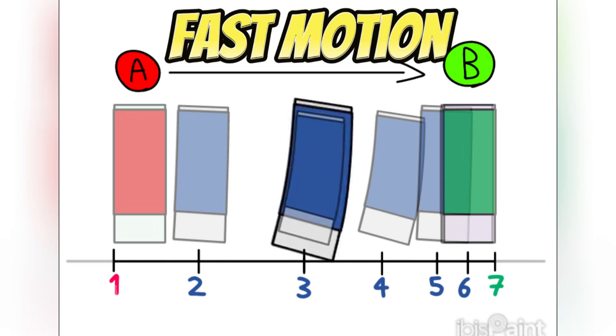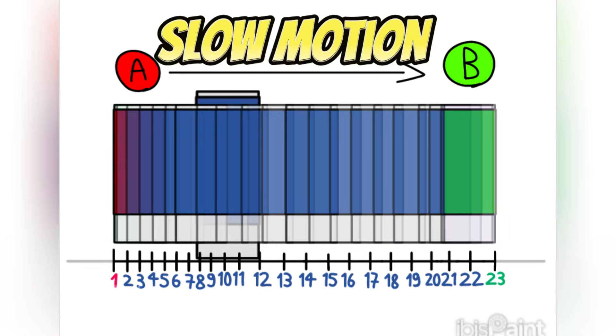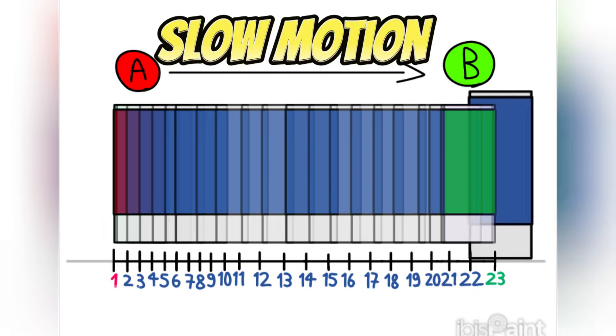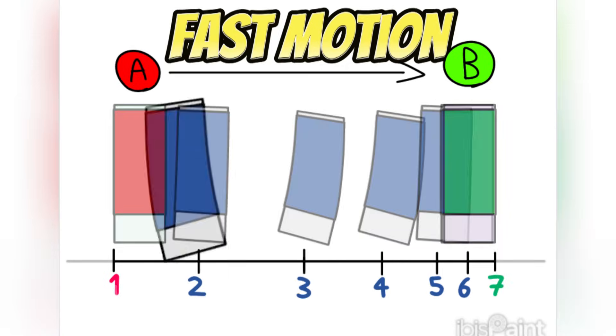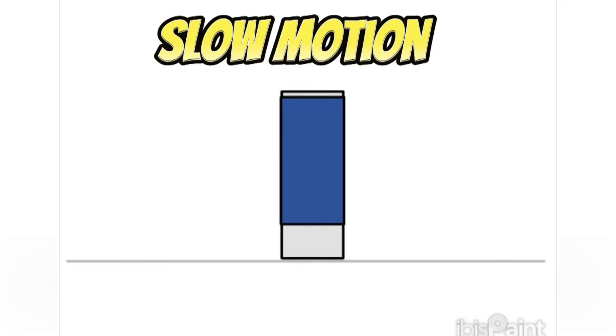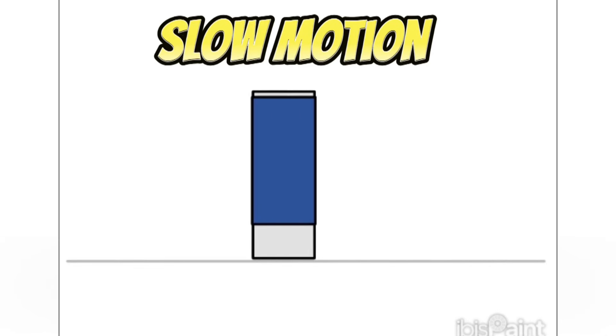Fast motion might only require a few frames, while slow motion can involve more frames. That's why we create keyframes first — they help us decide how many frames to use for our animation.